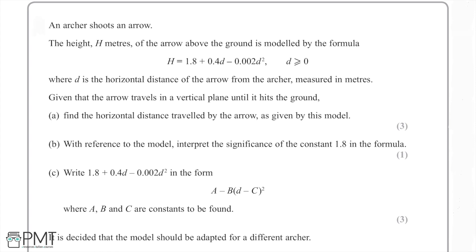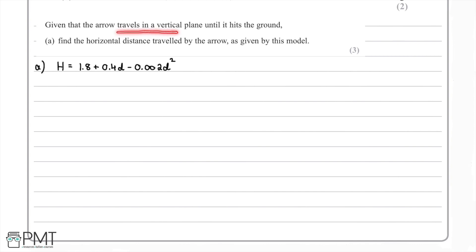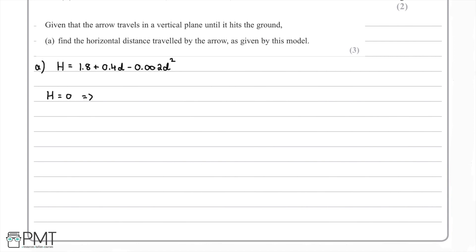In part A, we're told the arrow travels in a vertical plane until it hits the ground, and we're asked to find the horizontal distance travelled. When the arrow hits the ground, the height h equals zero. So we set up the equation: −0.002d² + 0.4d + 1.8 = 0.